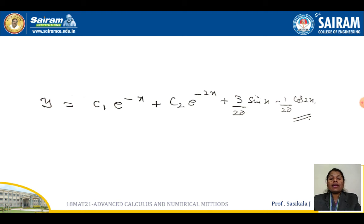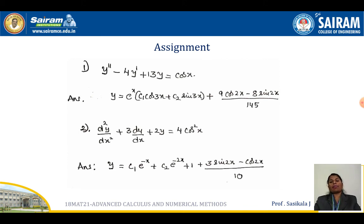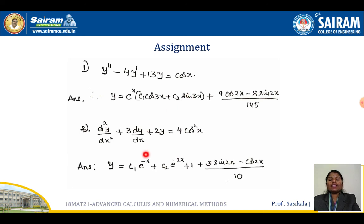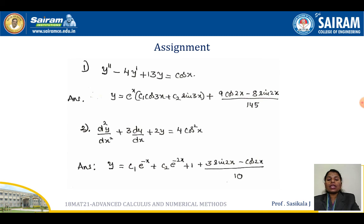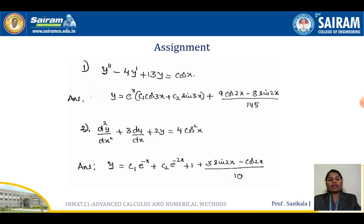The complete solution is complementary function plus particular integral. Some practice problems have also been given. For the first one, directly replace d squared by −1. The second one involves cos² x — use the formula cos² x = (1 + cos 2x)/2 and sin² x = (1 − cos 2x)/2 to convert, then apply the two particular integrals separately using the f(d²) method. Try to get those answers and check them.